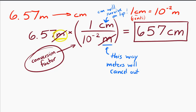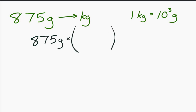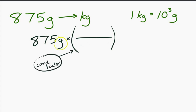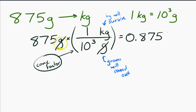Let's do one more example: 875 grams converted to kilograms. We know that 1 kilogram equals 10 to the 3 grams — kilo is 10 to the 3. The conversion factor will have 1 kilogram and 10 to the 3 grams. I want to annihilate the grams, so I put grams in the denominator of the conversion factor so they cancel out, and kilograms go in the numerator so they survive. Putting in the associated numbers, 875 grams equals 0.875 kilograms.